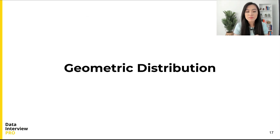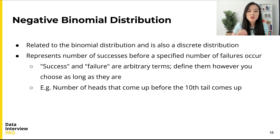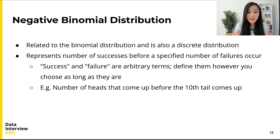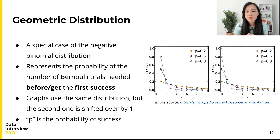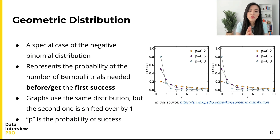The last distribution we'll discuss today is the geometric distribution. Before we get there, it's helpful to know the negative binomial distribution. As the name suggests, it is related to the binomial distribution and is also a discrete distribution. This distribution represents the number of successes before a specific number of failures occur — success and failure are arbitrary terms you can define as long as they are binary outcomes. The geometric distribution is a special case of the negative binomial distribution, and it represents the distribution of the number of trials needed to get the first success.